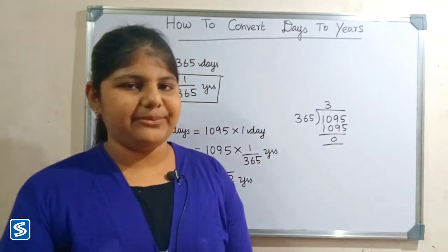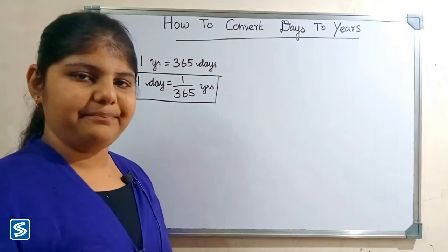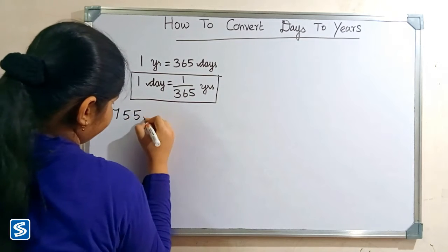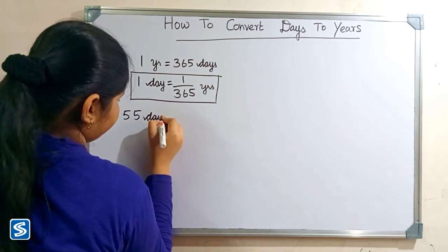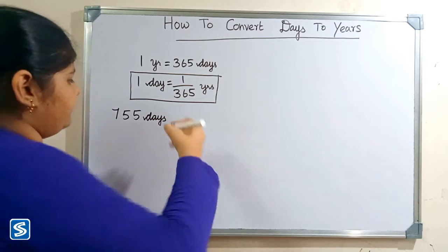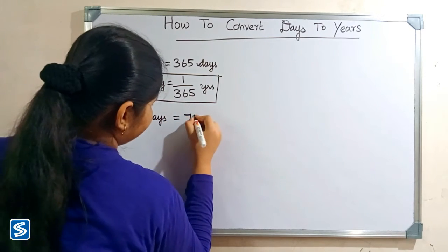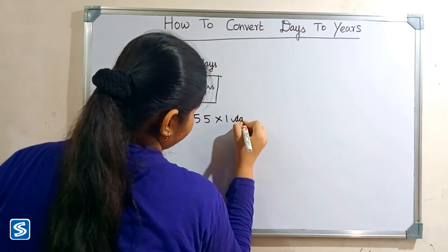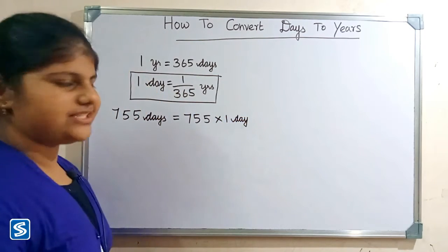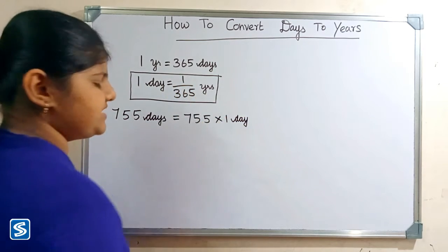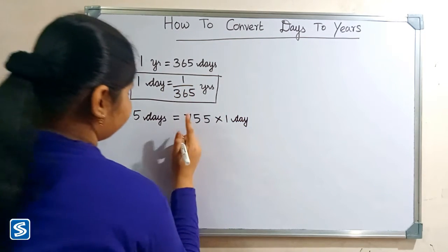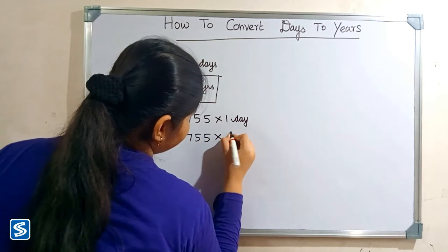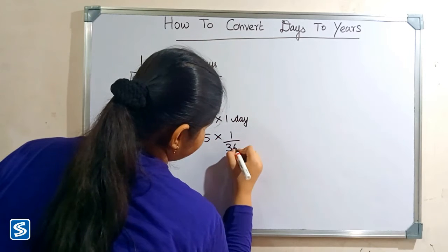Next we will take one more example. For example, 755 days. 755 days can be written as 755 multiply one day. Now we have to substitute 1 by 365 years in the place of one day, so 755 multiply 1 by 365 years.